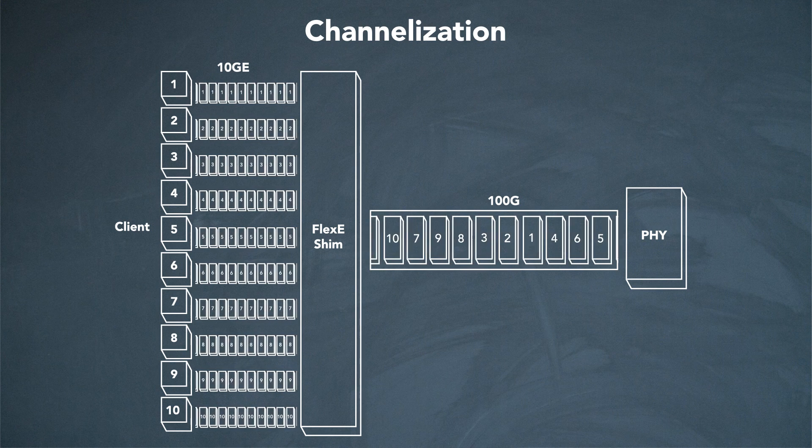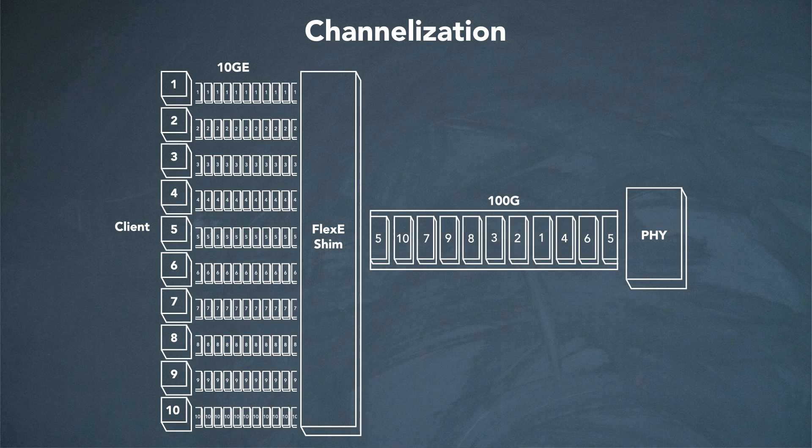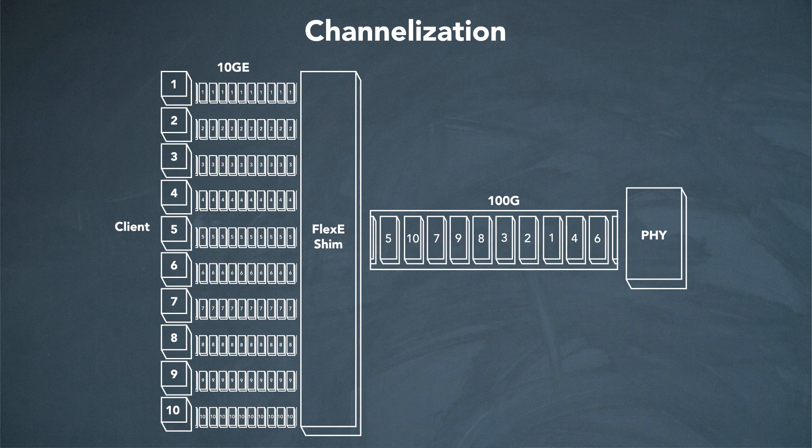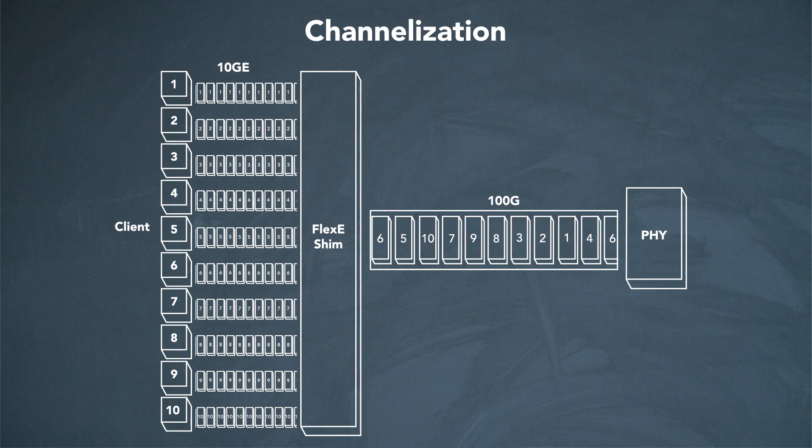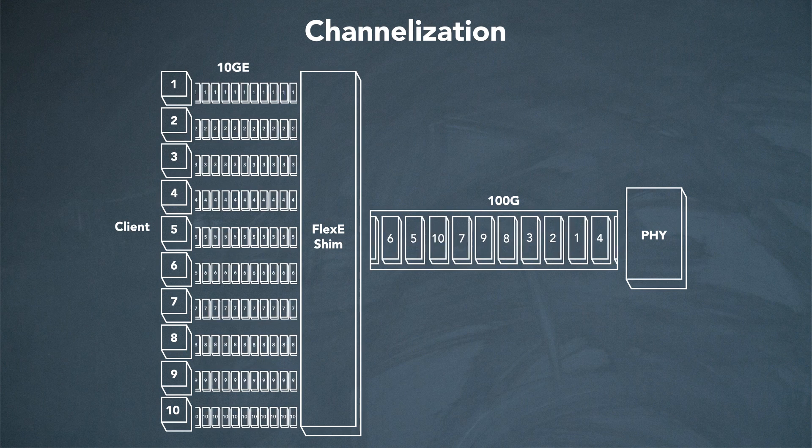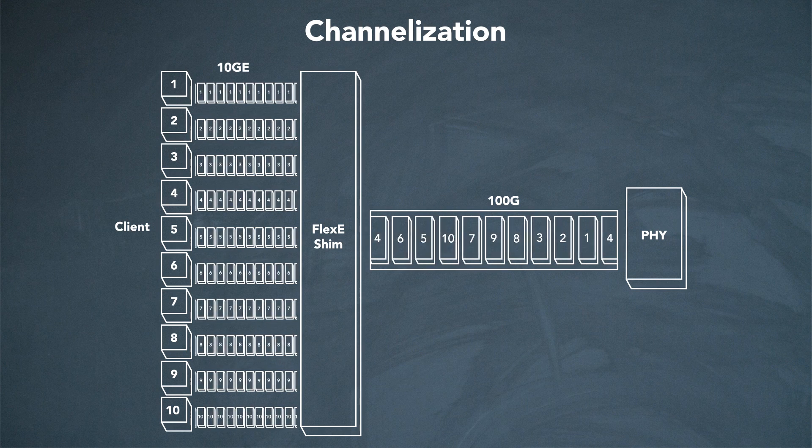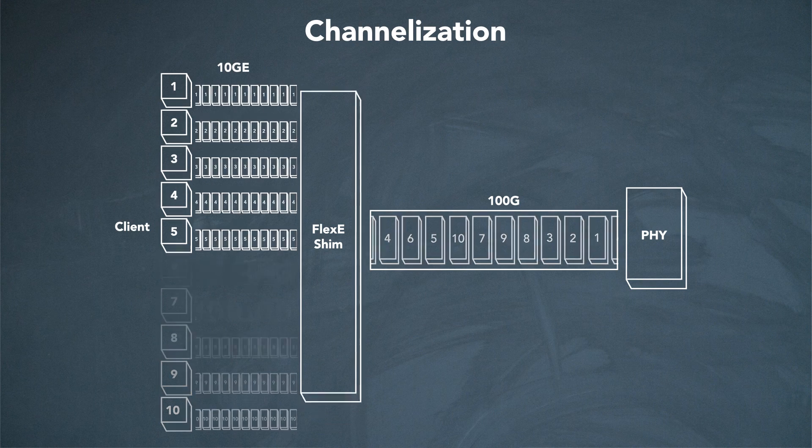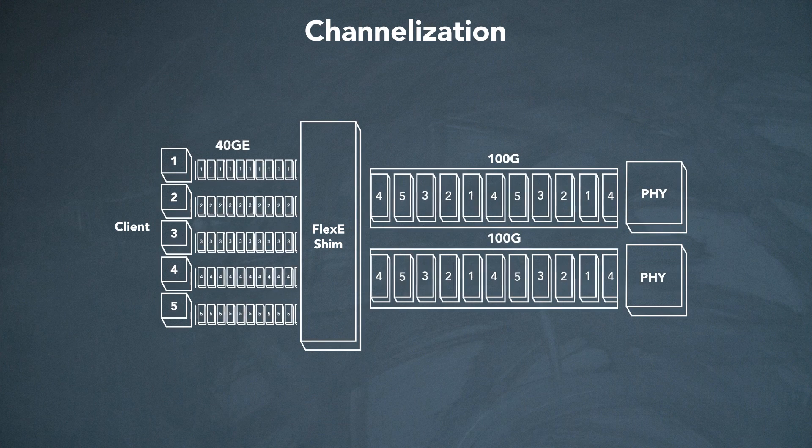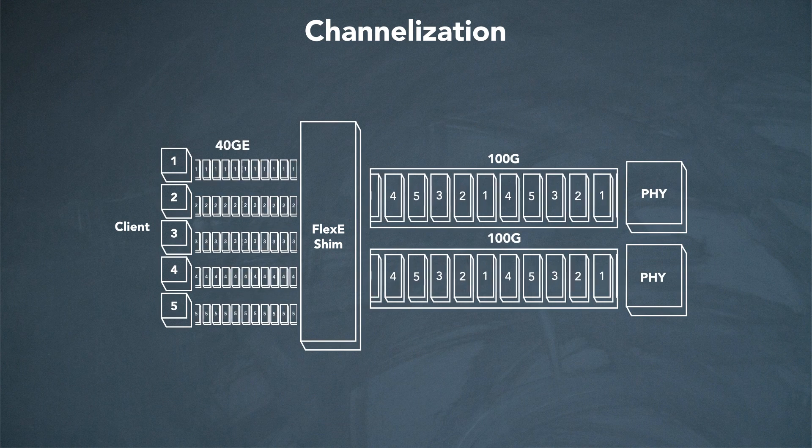FlexE is essentially a new generalized MLG or multi-link gearbox. For example, you can take 10 10GBs and aggregate them on a 100GB group interface. Or you can take five 40GBs and aggregate them on a 200GB group interface.